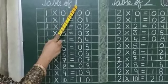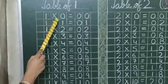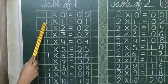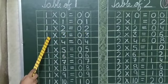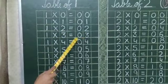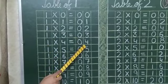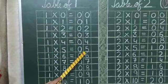Table of 1. 1 0s are 0, 1 1s are 1, 1 2s are 2, 1 3s are 3, 1 4s are 4, 1 5s are 5.